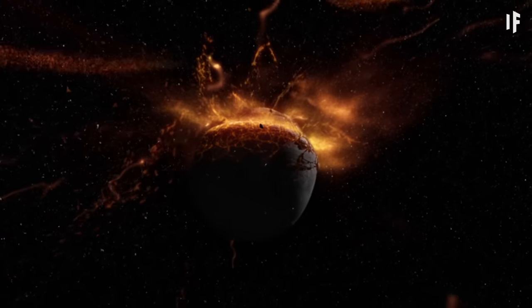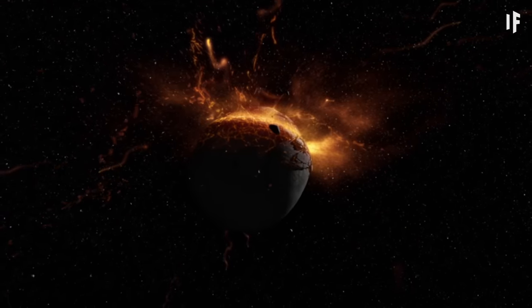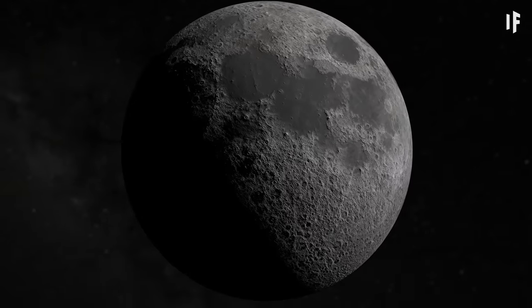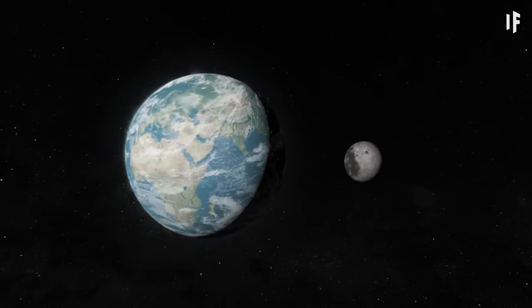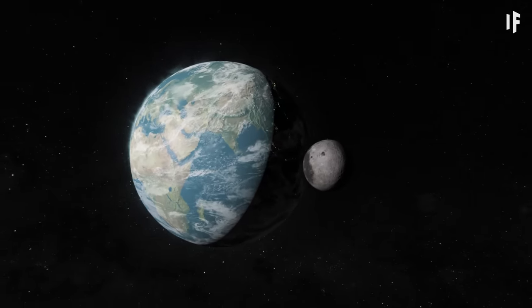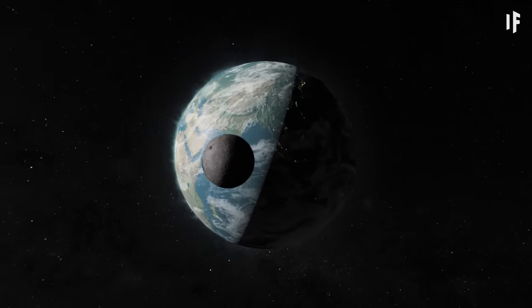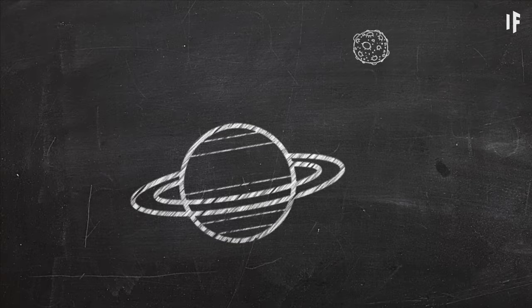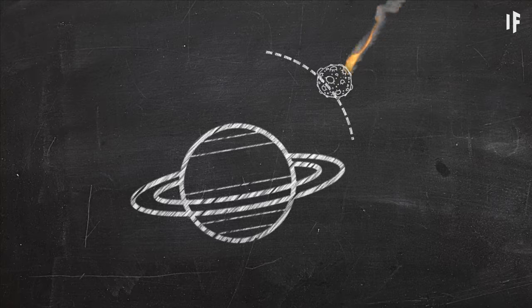It wouldn't necessarily take another collision to form rings around the Earth. We could just crumble the Moon. And for that, we'd only need to move it a little closer. The gravitational pull that our planet exerts on the Moon isn't equal everywhere. It's much stronger on the side of the Moon that is closest to us. There is a limit on how close celestial bodies can be to each other. It's called the Roche limit. If they get any closer than that limit, the larger body shreds the smaller one into pieces.